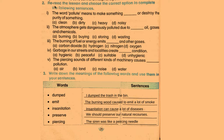Question number 1. Reread the lesson and choose the correct option to complete the following sentences. The first one: the word 'pollute' means to make something dash or destroy the purity of something. The options are: to clean, to make something dirty, heavy, or noisy. The answer is: to make something dirty.